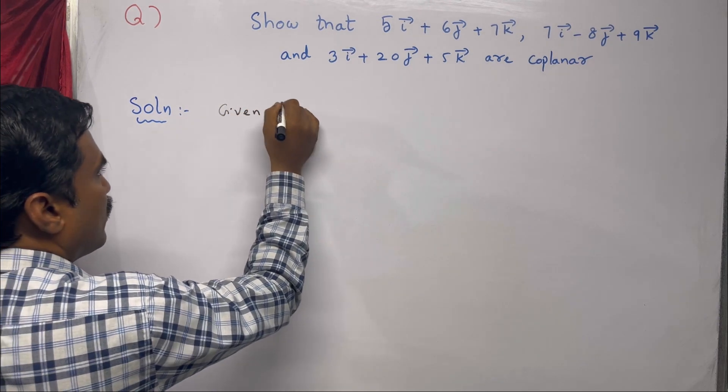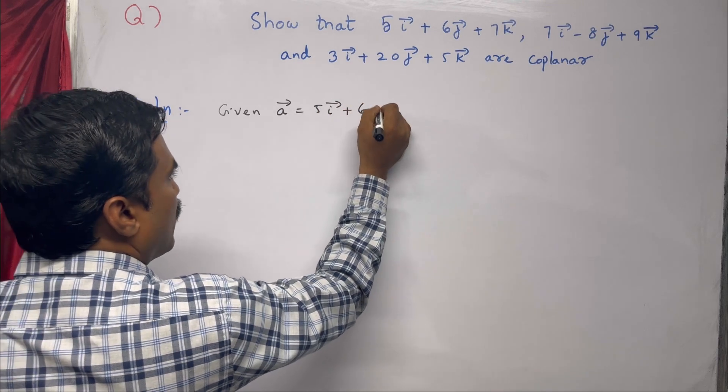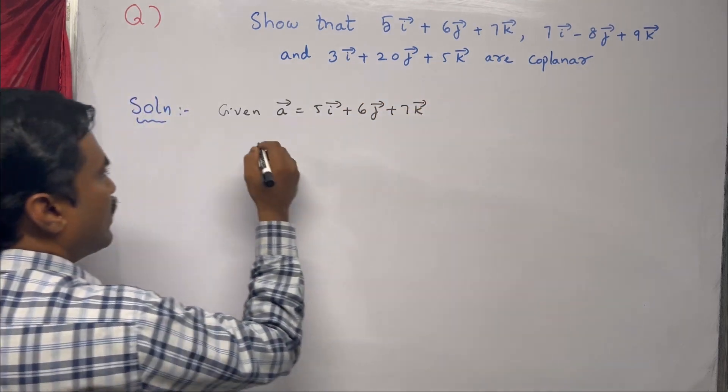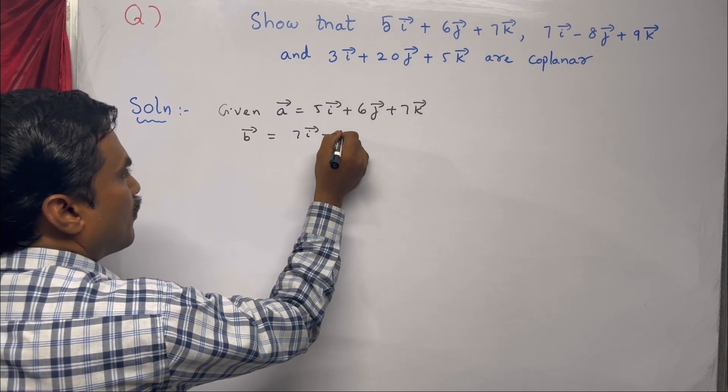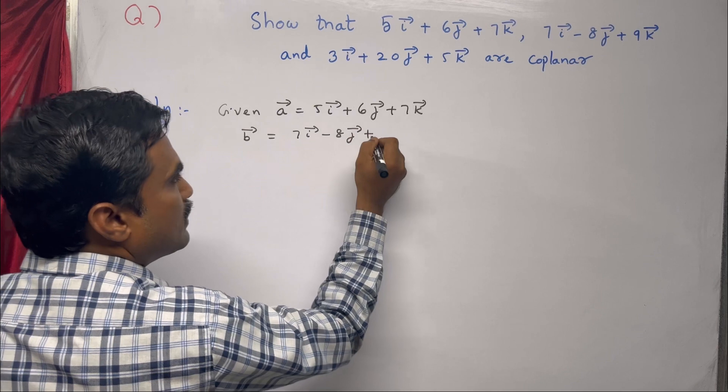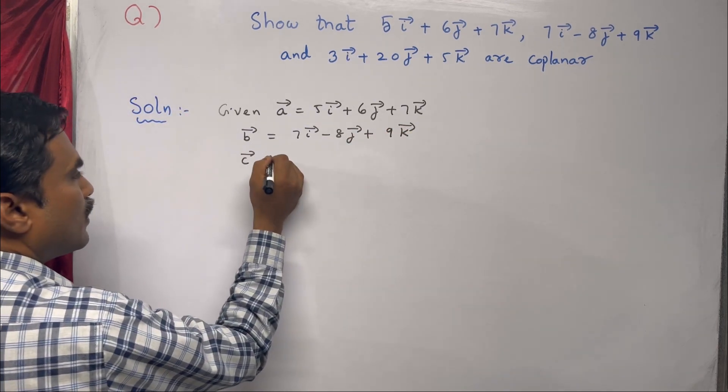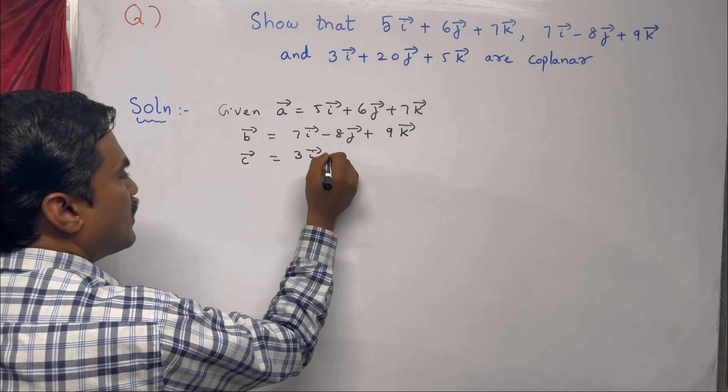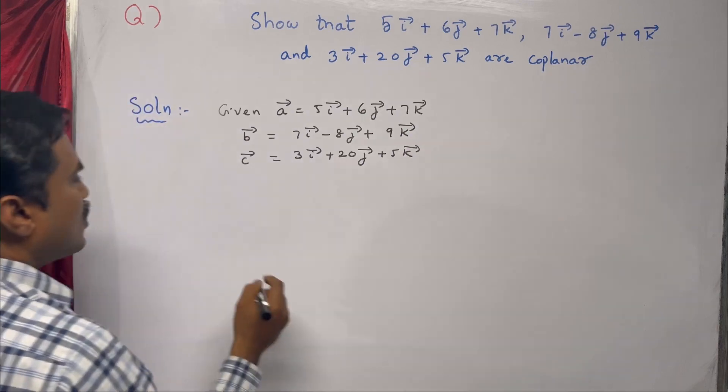First, write the given three vectors. Given â equals 5î + 6ĵ + 7k̂, and the second vector b̂ equals 7î - 8ĵ + 9k̂, and the third vector ĉ equals 3î + 20ĵ + 5k̂.